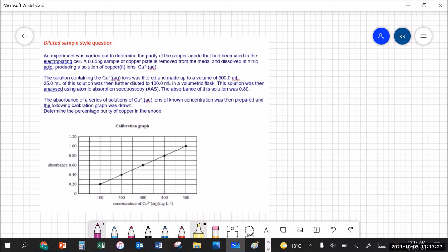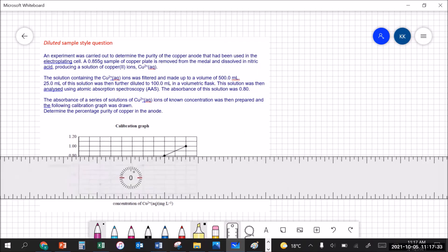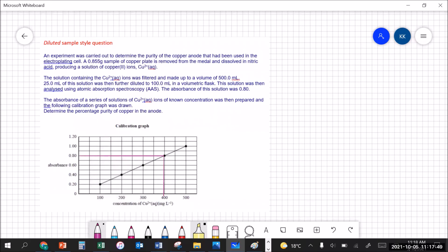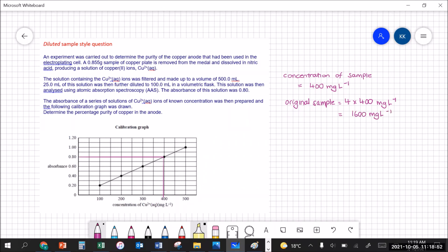Using the graph we can determine the concentration from the absorbance. The absorbance of 0.80 corresponds with a concentration of 400 milligrams per liter. Now we need to work this back through the dilution. That was the diluted sample but that had been diluted four times. So that means the original sample is four times as concentrated. Now that's the concentration of the 25 mils of the solution that was taken out of the total 500 mils. Now that has the same concentration as the 500 mils.